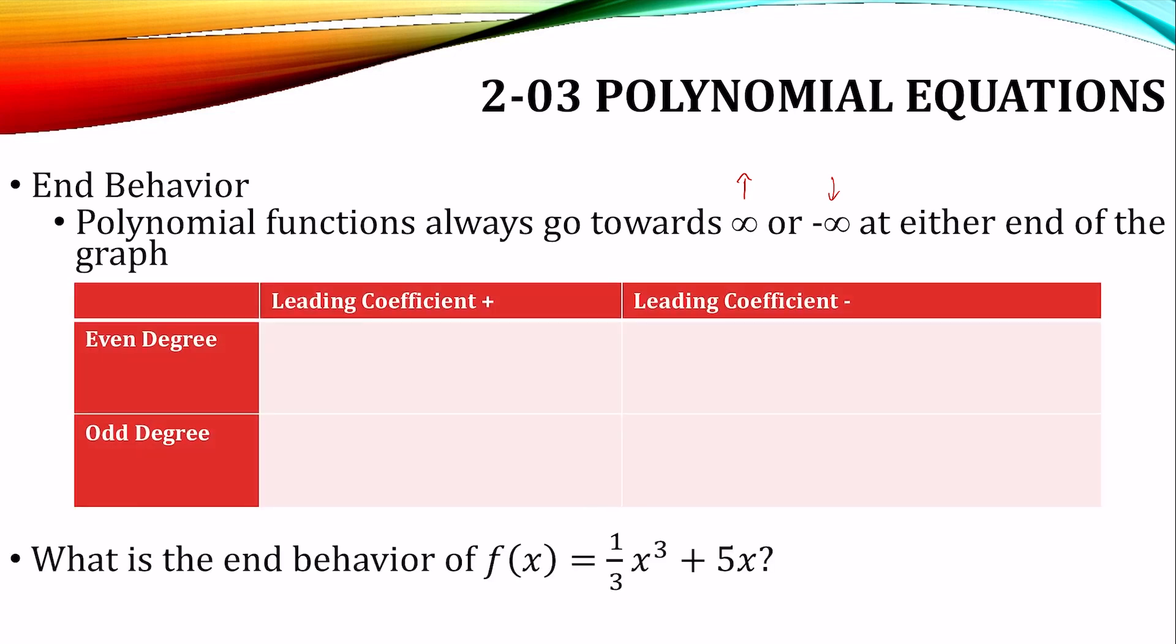If we have an even degree with a positive leading coefficient, both ends go up. So we'd say this rises to the left and it rises to the right.